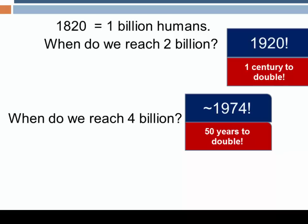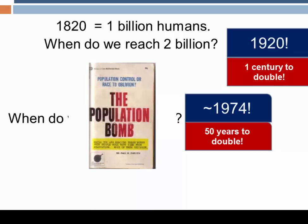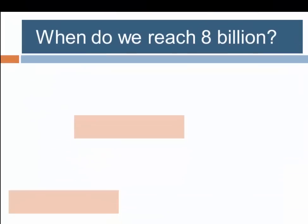Without fudging too much, we can say it required about 50 years for the global population to double. Around this time — the late 1960s and early 1970s — scientists started to become aware of the rate of human population growth, and books like Paul Ehrlich's were published predicting imminent catastrophe because of the exploding human population.